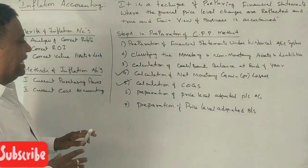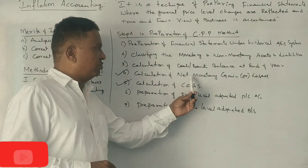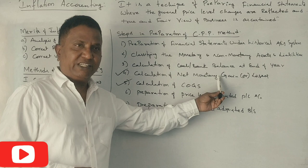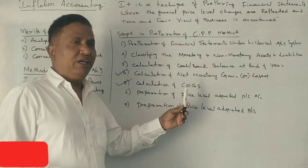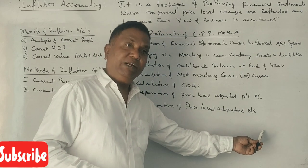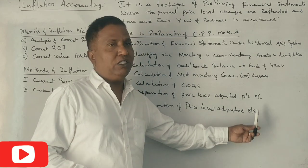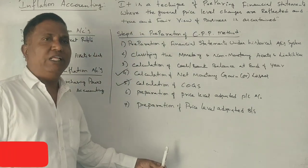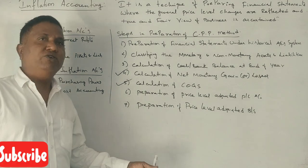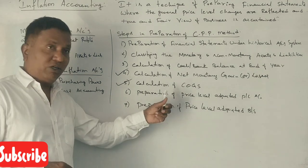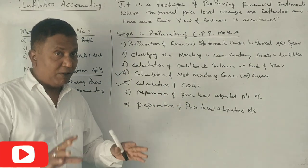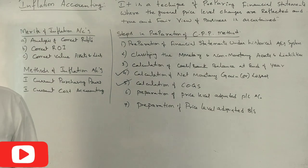So these are the seven steps in the preparation of inflation accounting. This covers the theory of monetary and non-monetary classification, net monetary gain or losses, and cost of goods sold. In 2021, the cost of goods sold from the historical records is adjusted under this method.